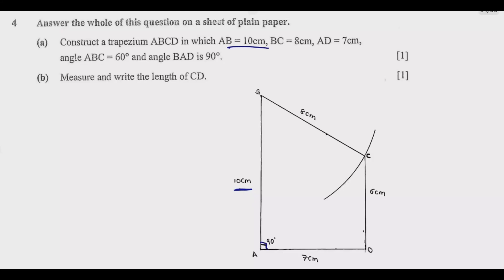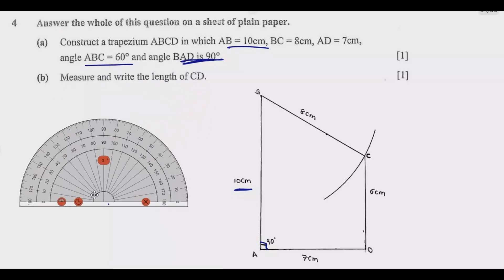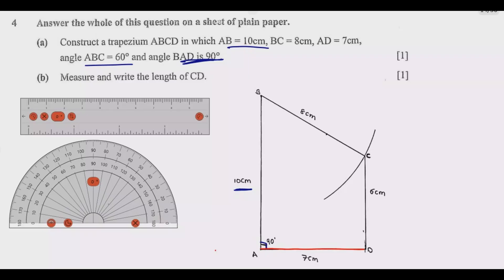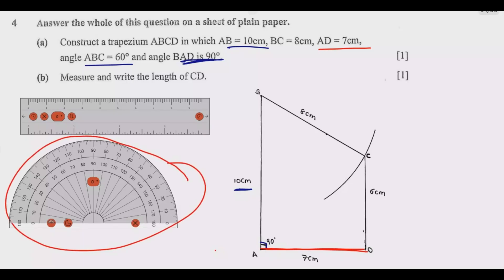The first step is to draw the 10 cm line AB — the longest side. Then ensure that angle BAD is 90 degrees. Using the ruler, measure AD which is 7 cm, because you've been given what AD is. Then you use the protractor to measure the angle, making sure this angle is 90 degrees and the length AB is 10 cm. No compass needed for this step.